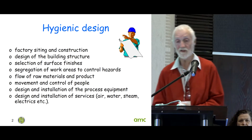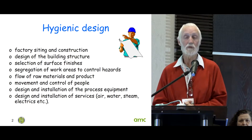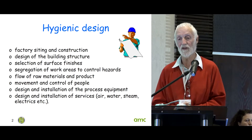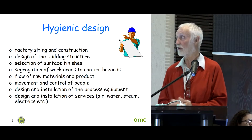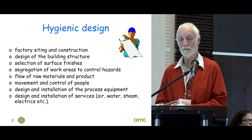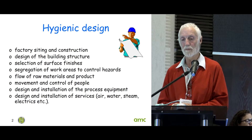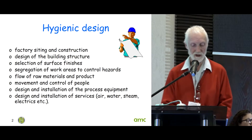I've been basically using those two programs, but I've begun to realize that there is more needed than just that in order to be defeating Listeria. Where we started with the design of equipment and design of facilities is the whole concept of hygienic design, which covers factory siting and construction, design of the building structure, selection of surface finishes, segregation of work areas, flow of raw materials and product, people, and the design of the process equipment itself, and the services that go with it.